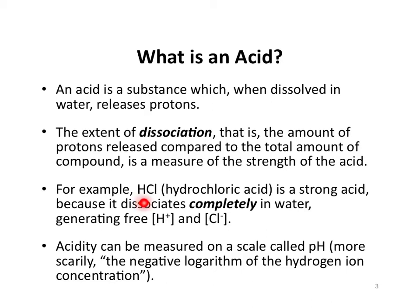A common acid we'll work with in lab is hydrochloric acid. We consider HCl to be a strong acid because it dissociates completely in water — much like sodium chloride. It breaks apart completely into H+ and Cl- ions. Each of those ions becomes surrounded by water molecules and will not come back together under normal circumstances. Because H+ has dissociated from the HCl, the H+ concentration in solution increases.